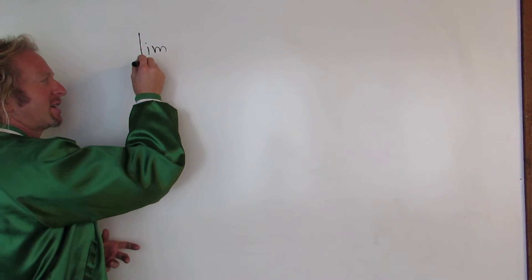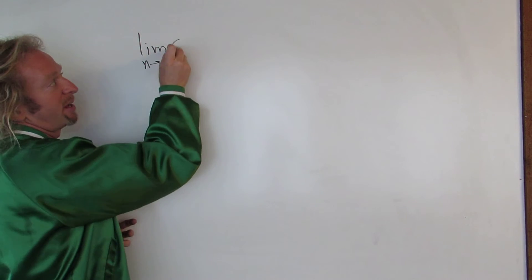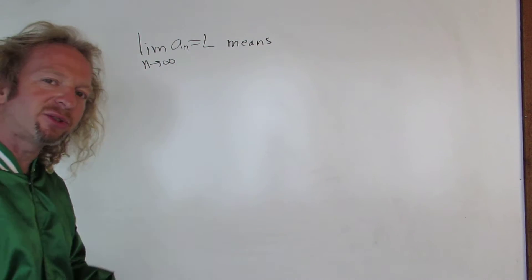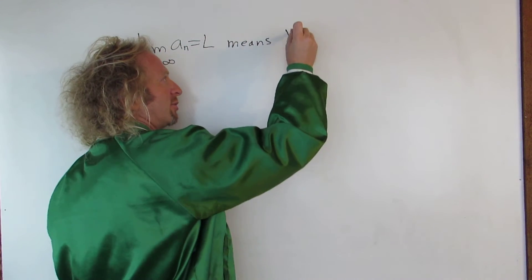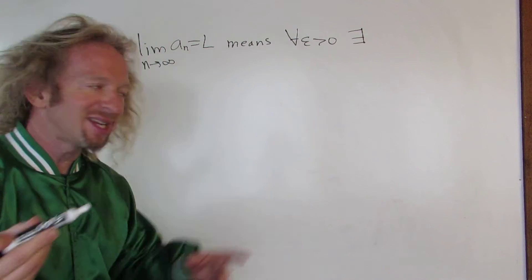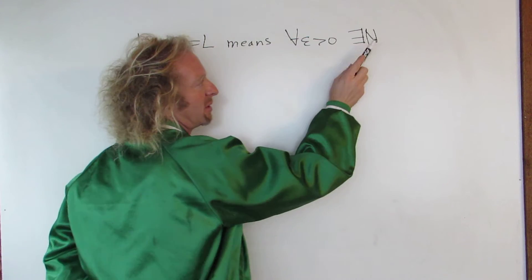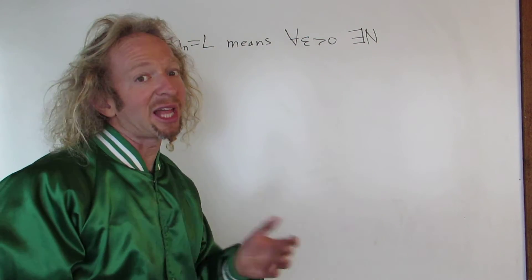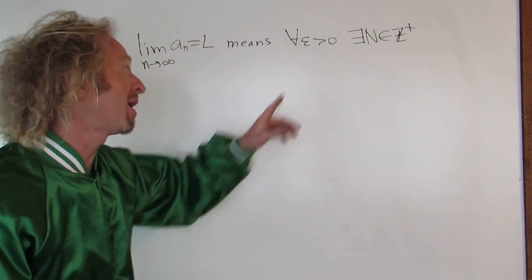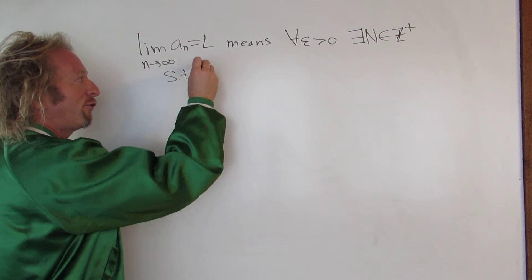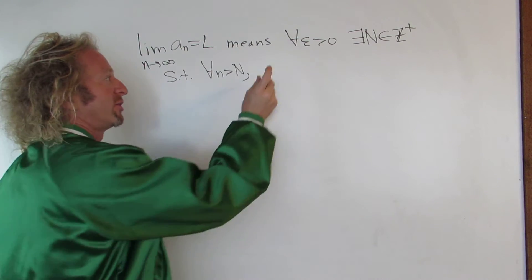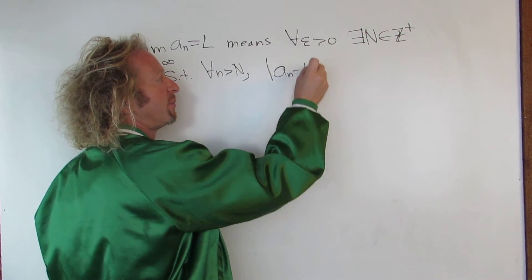The definition says that when you take the limit as n approaches infinity of a sequence, which we'll call a sub n, and if that's equal to L, this means — using formal notation — for all epsilon greater than zero, there exists a positive integer N. I say positive integer because some people allow zero to be a natural number, which I don't like. So there exists a positive integer N such that for all little n bigger than capital N, the absolute value of a sub n minus L is less than epsilon.